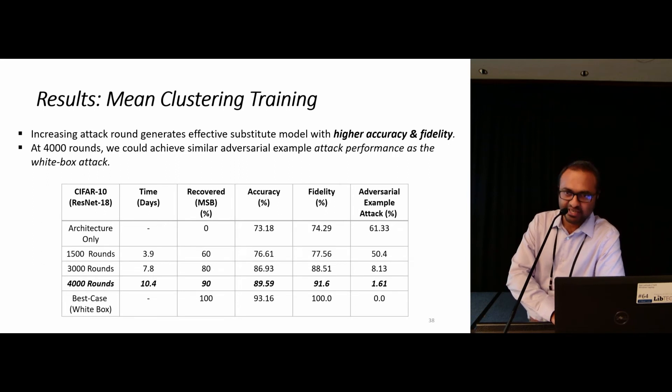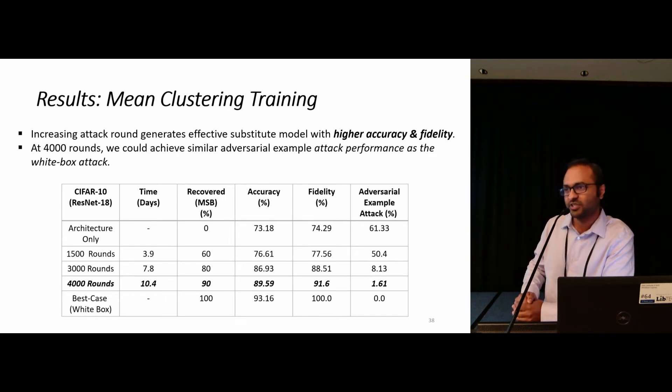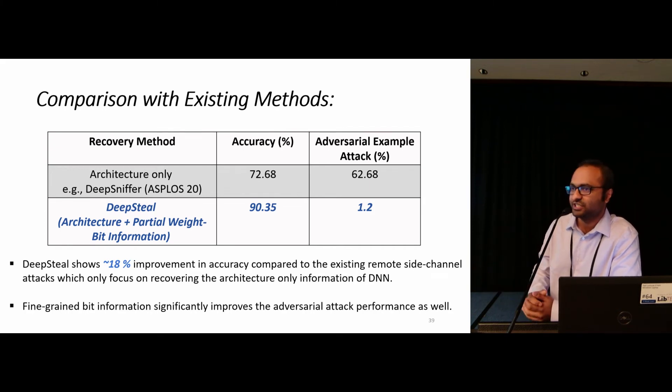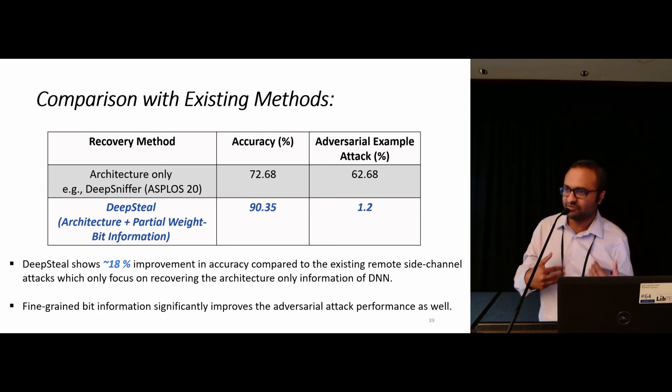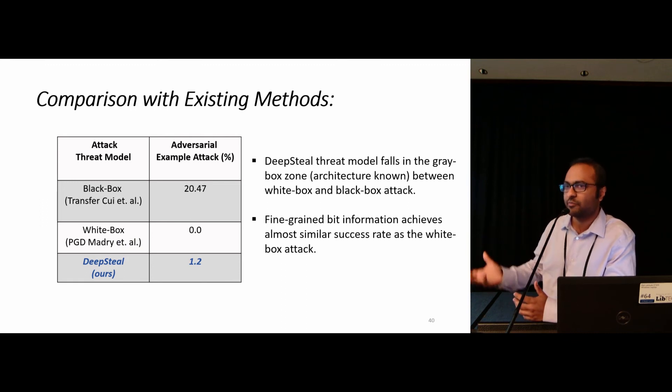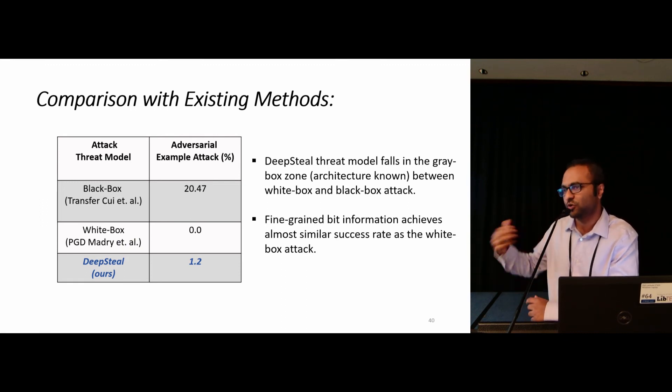In terms of mean clustering training performance, with increasing rounds of attack, the accuracy keeps improving for the substitute model as well as the fidelity. And the adversarial attack performance moves closer towards the white-box attack performance, which is quite intuitive because we recover more and more bit information with more rounds. In terms of comparison, we mainly compare with the existing remote side channel attack, which uses the strategy of recovering the architectural information. With this additional information of the weight bits, we could improve the accuracy of the substitute model by 18%. And as we already mentioned, we have more information compared to a black-box case. Our attack performance is more closer to the white-box performance.